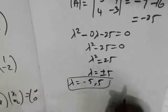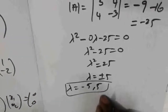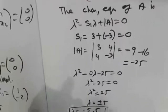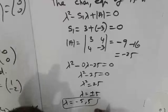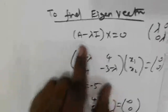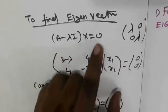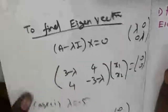Now using these eigenvalues we find the eigenvectors. Using (A minus lambda I) times x equals zero — that means using the characteristic root and characteristic vector. The eigenvector equation is A minus lambda I applied to x equals zero, applied to the given matrix.